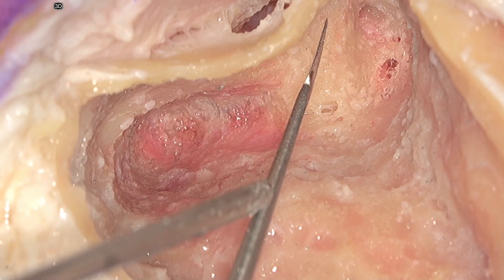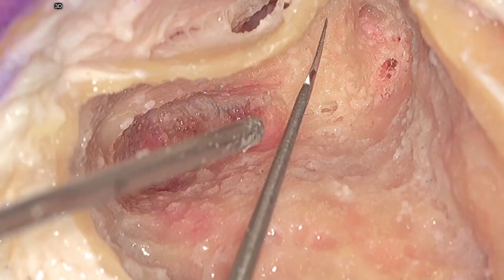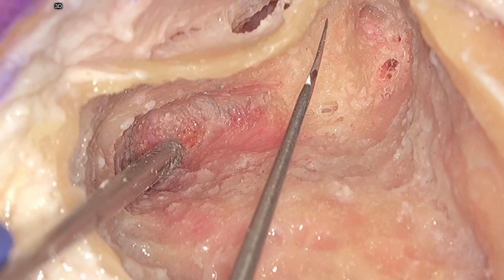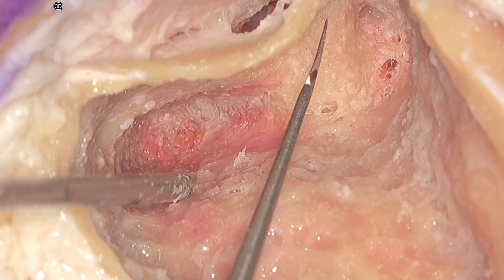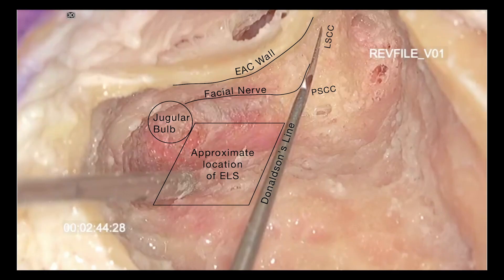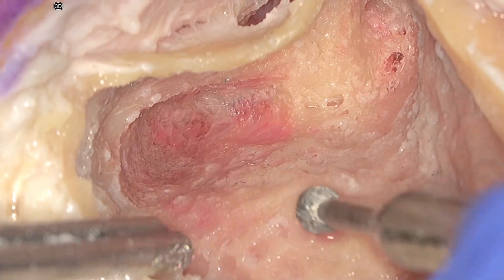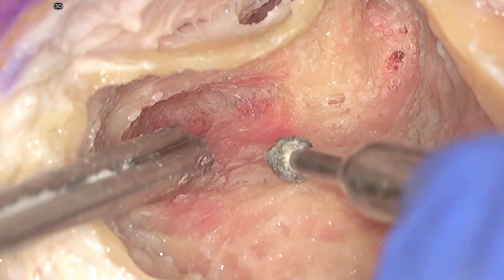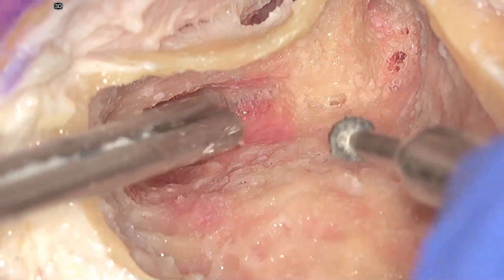When deciding where to remove the cortical bone overlying the posterior fossa dura, the surgeon estimates the location of the endolymphatic sac. Donaldson's line is a posterior extension of the plane of the lateral semicircular canal, demonstrated by the sickle. The endolymphatic sac is always found between Donaldson's line and the jugular bulb. Note the position of the sigmoid sinus and the cortical bone overlying the posterior fossa dura. Remind yourself of the location of the labyrinth and the facial nerve so as not to injure them.